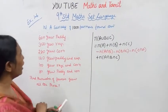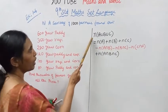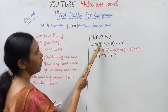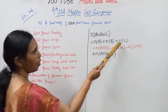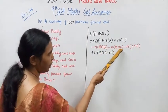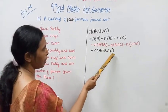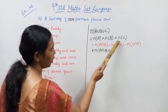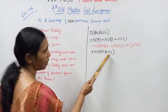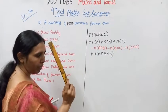We will use the formula: N(A∪B∪C) = N(A) + N(B) + N(C) − N(A∩B) − N(B∩C) − N(C∩A) + N(A∩B∩C).